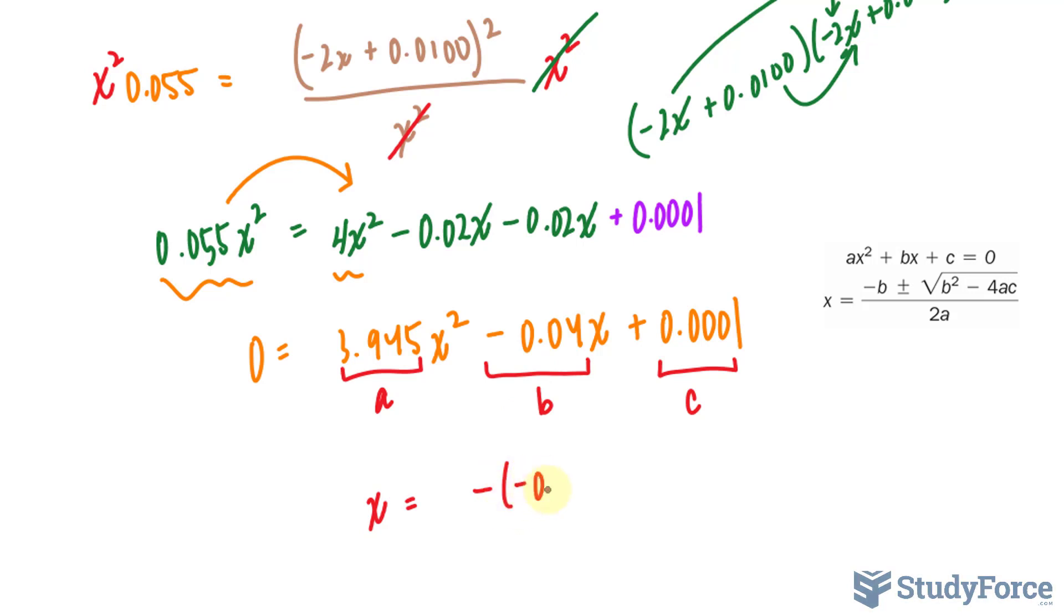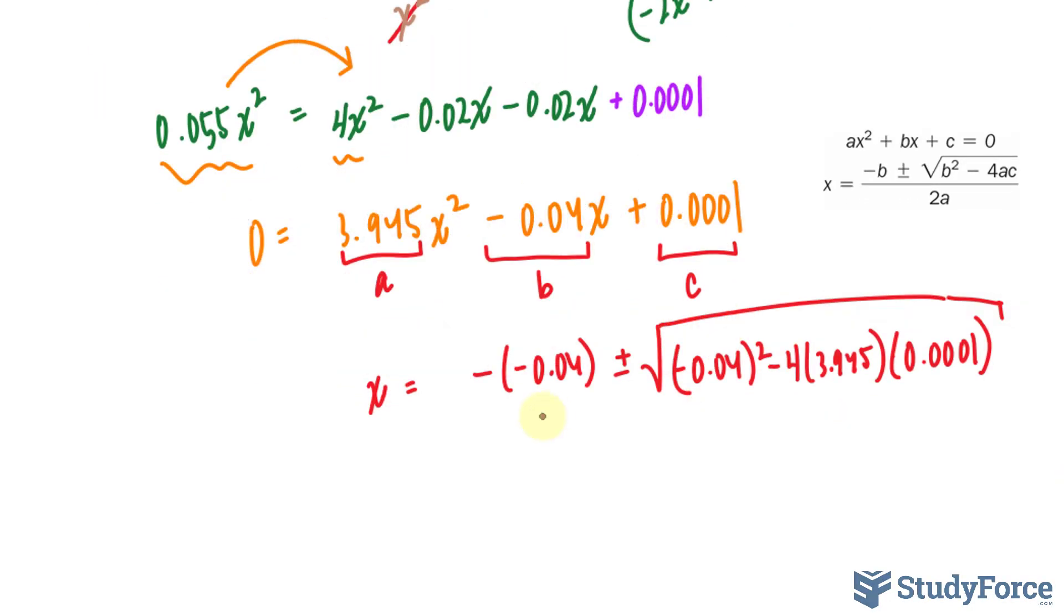Negative, negative 0.04, that's our B, plus minus the square root of, once again, negative 0.04, raise that to the power of 2, minus 4 times this number, and that's being multiplied to C. At the bottom, we have 2 times A. So 2 times 3.945.